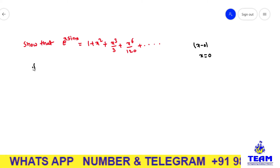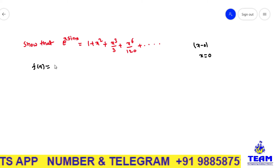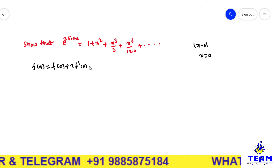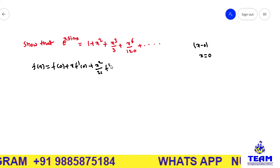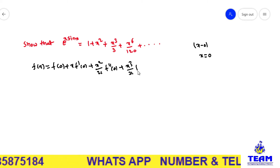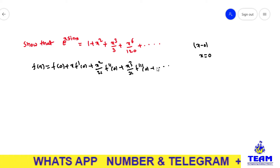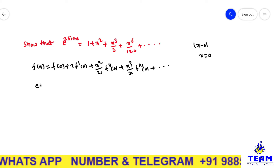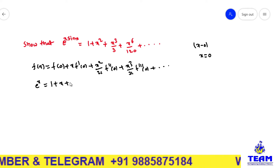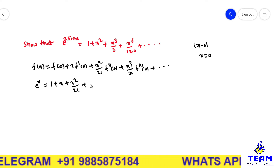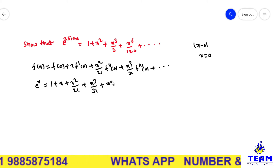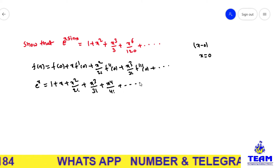The McLaurin series expansion of f(x) is: f(0) + x·f'(0) + x²/2! · f''(0) + x³/3! · f'''(0) + so on. We also know the expansion of e^x about x=0 is 1 + x + x²/2! + x³/3! + x⁴/4! and so on.